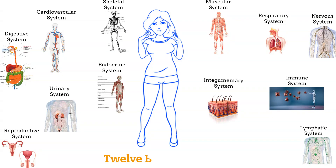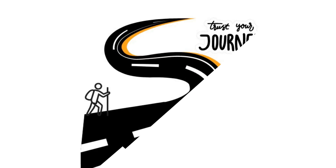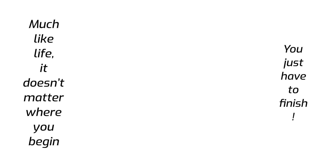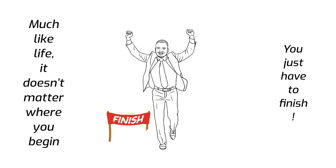All 12 body systems are present and accounted for — we are off to a great start! Now that we have completed the roll call, let's take a quick journey through each system to review their purpose and uncover which body parts and organs are associated with each. Much like life, it doesn't matter where you begin — you just have to finish. So let's start with the skeletal system.